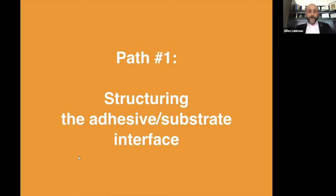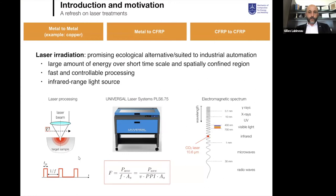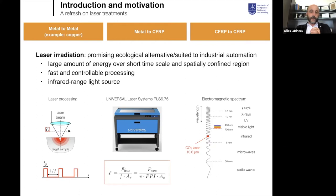Strategy 1: structuring the adhesive-substrate interface. To modify this interface, we use laser irradiation throughout this work. We use a classical CO2 laser system — there are many laser types available for CFRP, but this is the one we use consistently. Depending on the fluence — irradiation per unit time per unit surface — you can change how you modify the CFRP surface. At low fluence, you achieve surface cleaning and resin vaporization. At high fluence, you can completely vaporize the surface resin and expose the fibers.